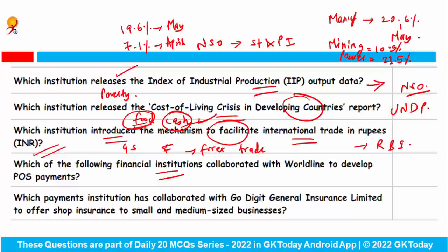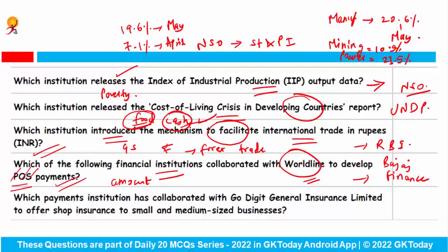Which financial institution collaborated with Worldline to develop POS payment? POS stands for Point of Sale — a technology used by retailers whenever a buyer pays online or offline to purchase goods and services. Bajaj Finance has partnered with Worldline to develop the POS payment. Additionally, Fino Payments Bank has collaborated with GoDigit General Insurance Limited to offer shop insurance to small and medium-sized businesses.